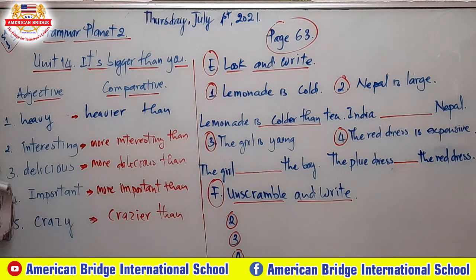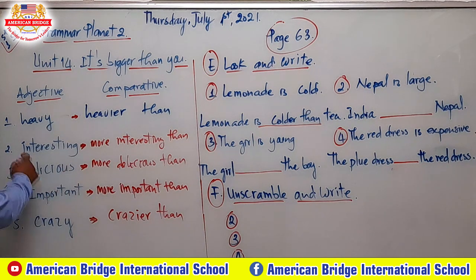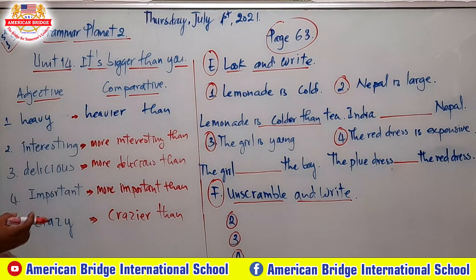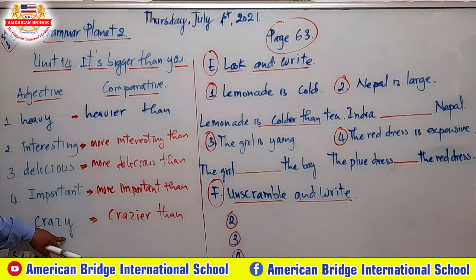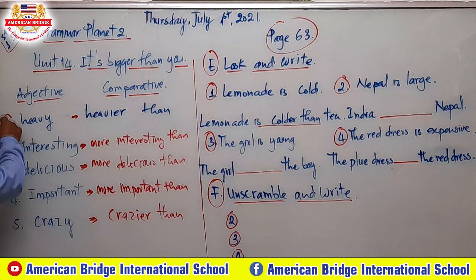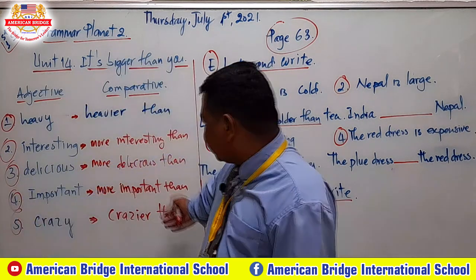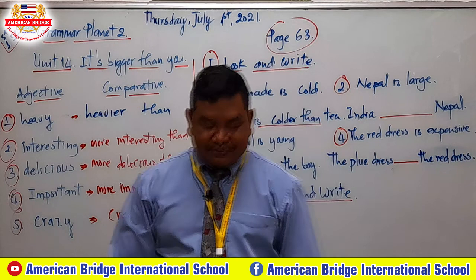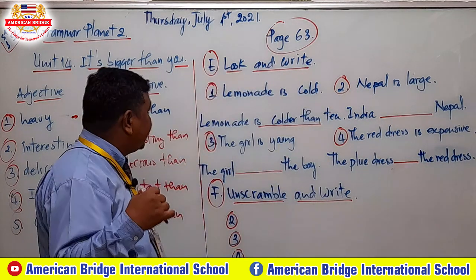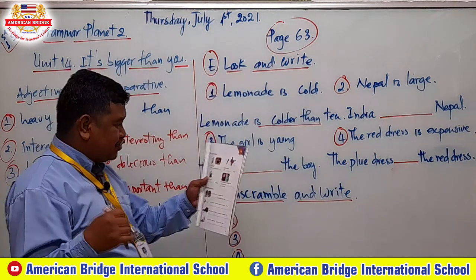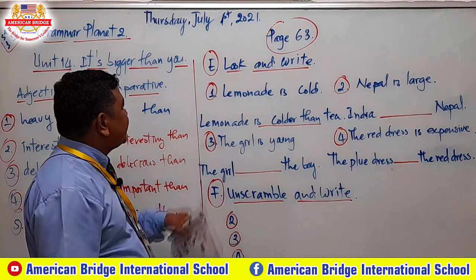So to summarize: for three or more syllable adjectives, you add 'more.' For two-syllable adjectives ending in Y, you change Y to I-E-R. If you don't understand, you can ask your homeroom teacher. Now start on page 63.